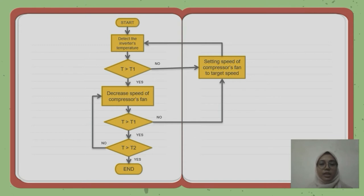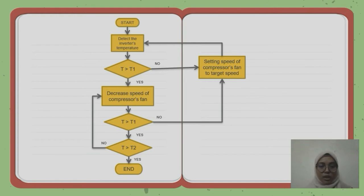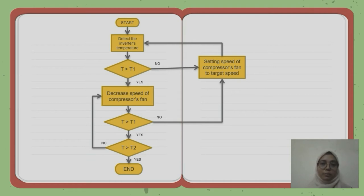After the compressor fan speed decreases, the 68K detects if T is larger than T1. If yes, the 68K will again detect if T is larger than T1. If no, the speed of the compressor fan will be set to the target speed. If T is larger than T2, the system will stop. If T is smaller than T2, the speed of the compressor fan will be decreased. After the fan speed is set to the target speed, Step 1 will be repeated. T1 is the indoor temperature, while T2 is the indoor temperature about to reach the desired temperature.